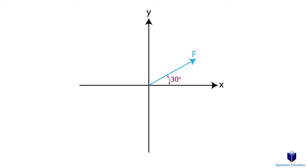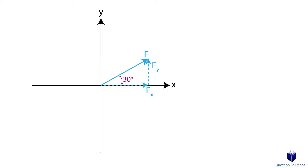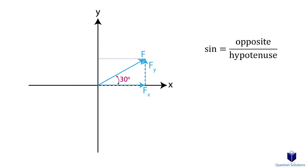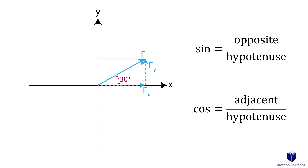We can draw the x and y components of this force. To calculate what these values are, we can move one of the components to form a right angle triangle. After that, you just need to keep in mind trigonometric ratios: sine is opposite over hypotenuse, cosine is adjacent over hypotenuse. The hypotenuse becomes the magnitude of the force while the sides become the components of the force.